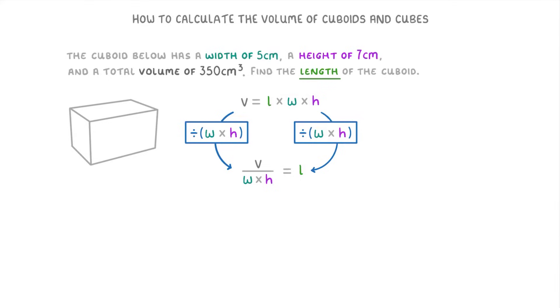And then all we have to do is plug in the values from the question and solve it. So 350 divided by 5 times 7, which if you put it into a calculator will give you 10. So the cuboid has a length of 10cm.